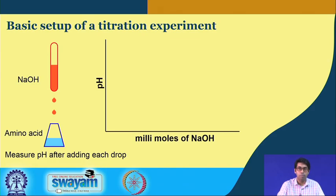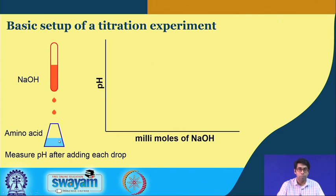I will quickly go over the concepts that we have learnt this week and try to show you the important points. Here is a very basic setup of a titration experiment, as we saw performed in the lab. What we wanted to do is determine the pI of an amino acid. We made a solution of an amino acid — first we used glycine. A 0.1 molar glycine solution was taken in a beaker and we titrated it with a base. We took sodium hydroxide which was roughly around 0.5 normal.